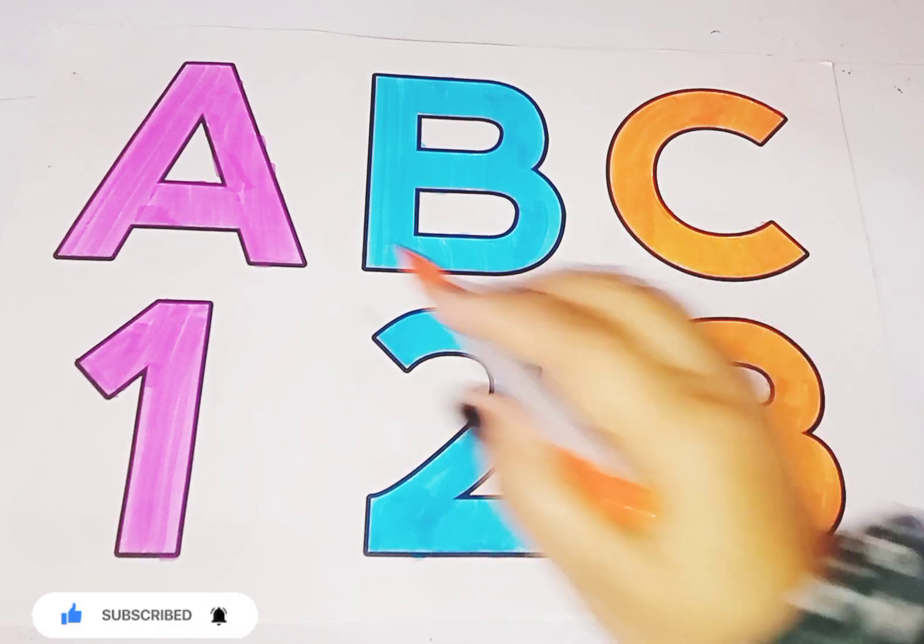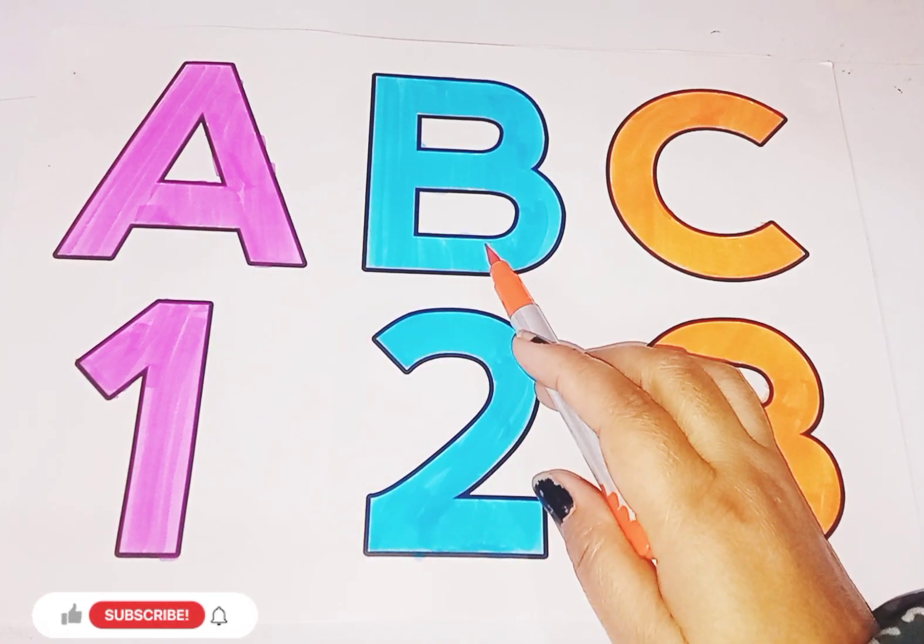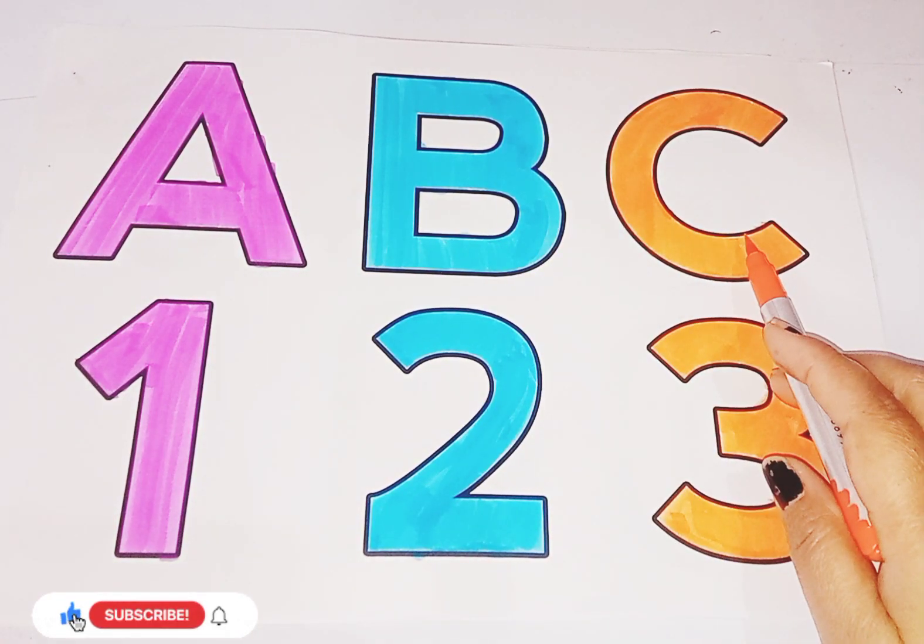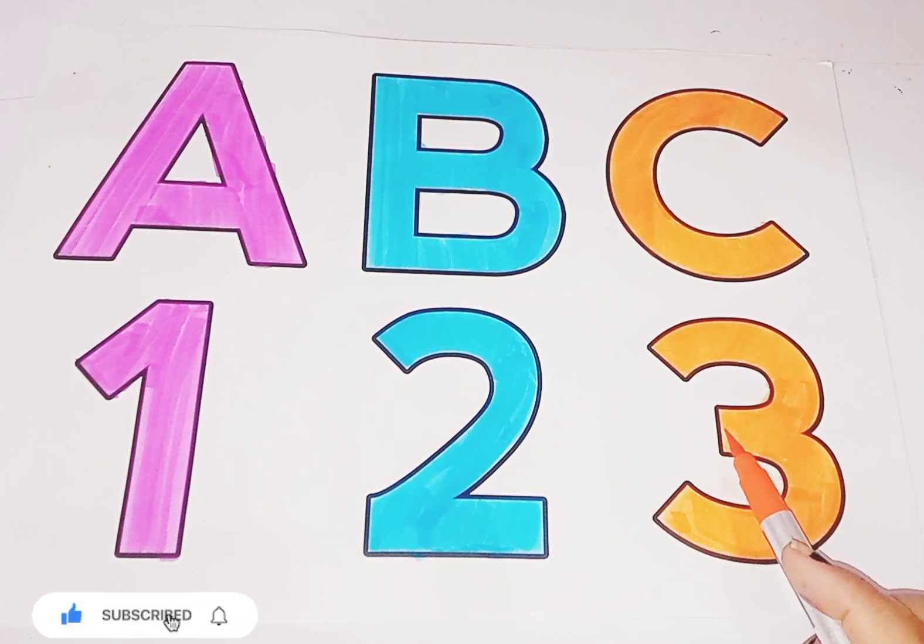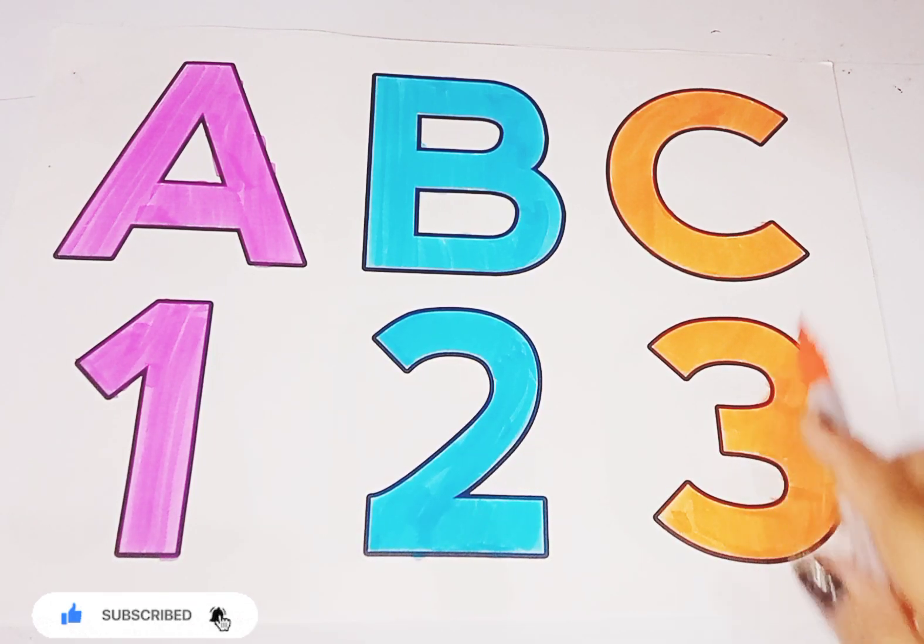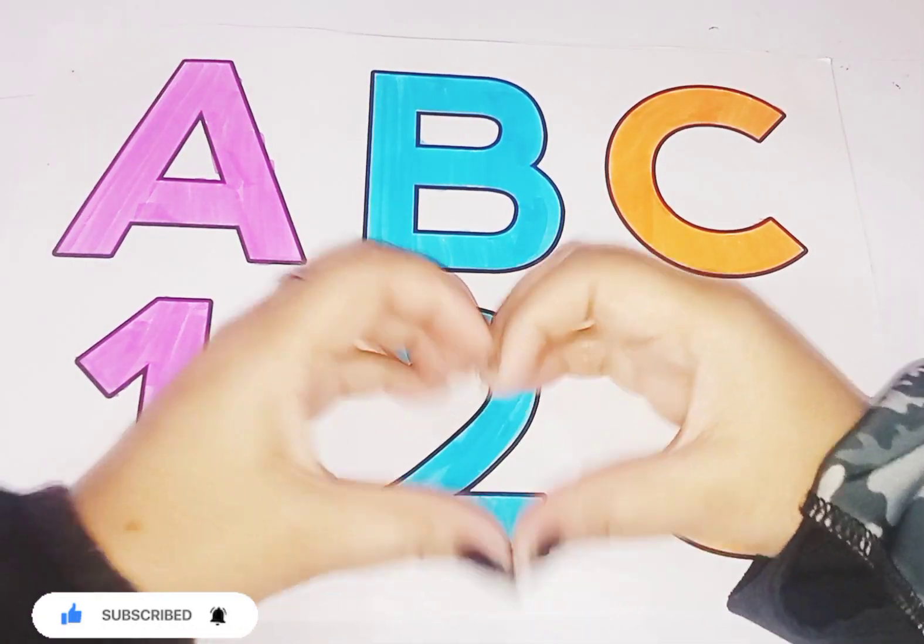So kids, today we learn alphabets and numbers. Let's revise again. A, A for apple. B, B for ball. C, C for cat. 1, O-N-E, 1. 2, T-W-O, 2. 3, T-H-R-E-E, 3. So kids, I hope you like the video. If you like the video, please like and subscribe my channel. Bye-bye.